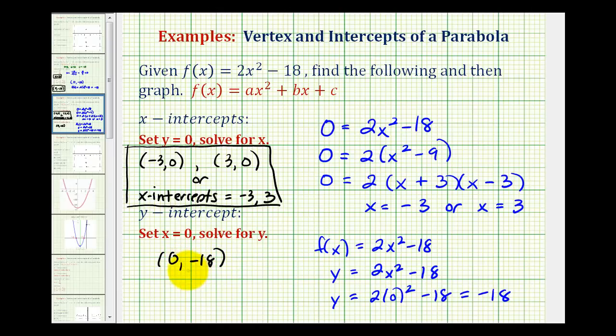Our y-intercept is the point 0 comma negative 18. In this case, the vertex and the y-intercept are the same, but that's not always the case. We can also write this as the y-intercept equals negative 18, but we don't want to say y equals negative 18 because that would be a horizontal line.